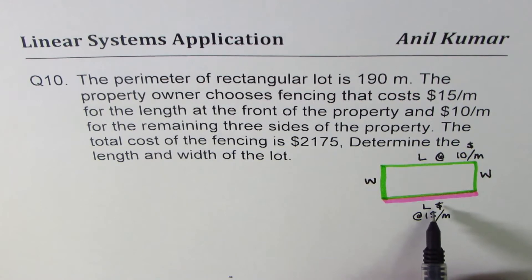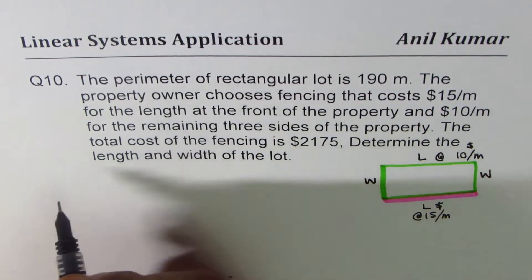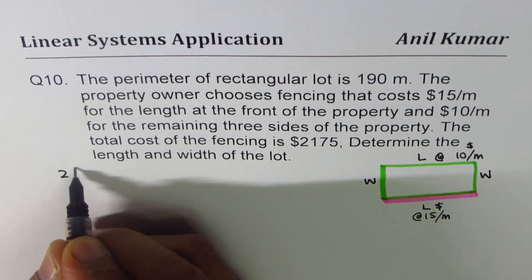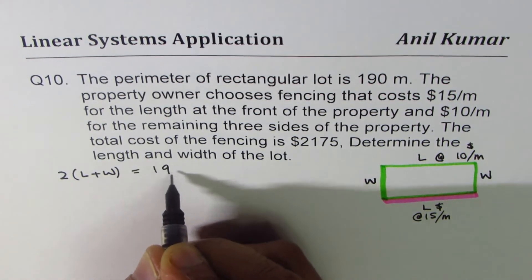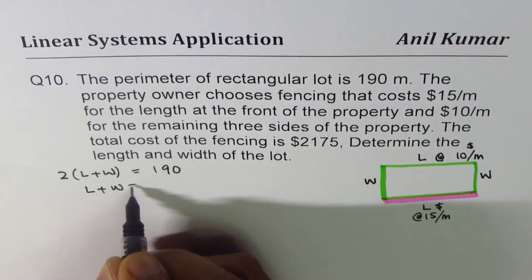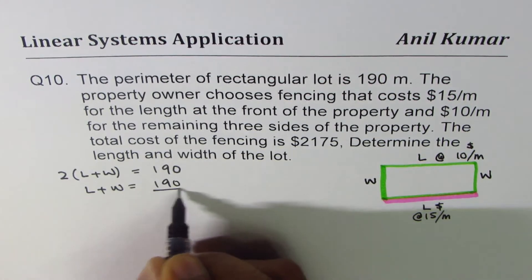Now since L is the length and W is the width, perimeter is what? 2 times length plus width equals to 190. So that gives us length plus width is half of 190, right?